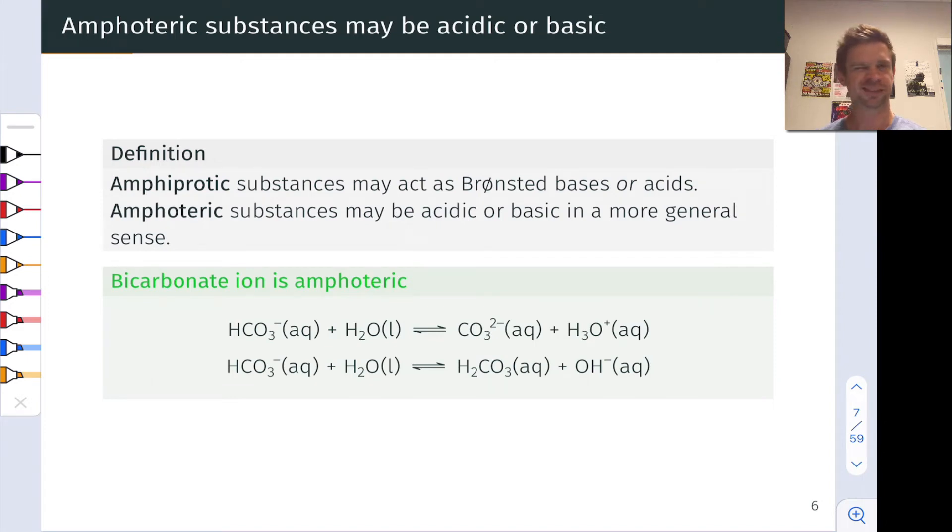Thus far we've looked at substances that are either weakly acidic or weakly basic and talked about Ka and Kb, but there are substances that may act as Bronsted bases or Bronsted acids and they're called amphiprotic substances. Amphoteric substances may be acidic or basic in a more general sense than the Lewis acid-base theory sense, which we'll touch on later, but for now amphiprotic substances are Bronsted acids or bases.